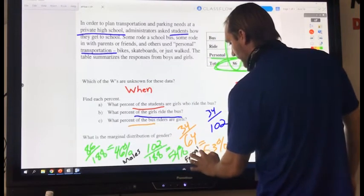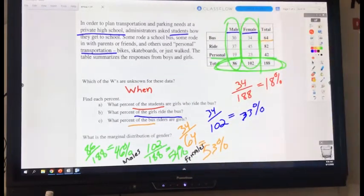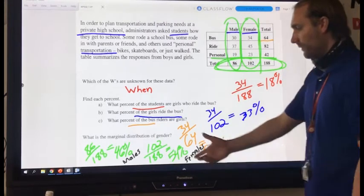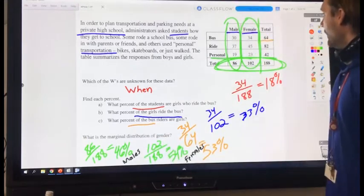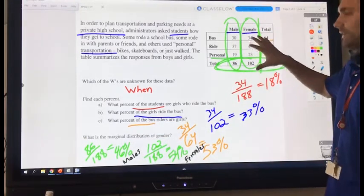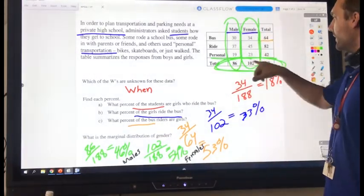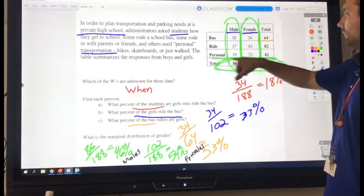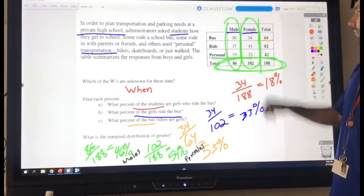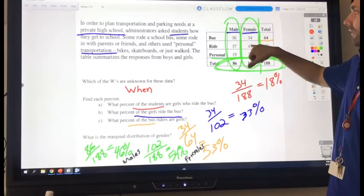So is there equal distribution between males and females? Is it an exact 50-50? No, it's not. I have a little bit more females than males. So I should be cautious when looking at this data and saying, oh, I think more females have a personal use. They ride bikes. I think more females have their own car.